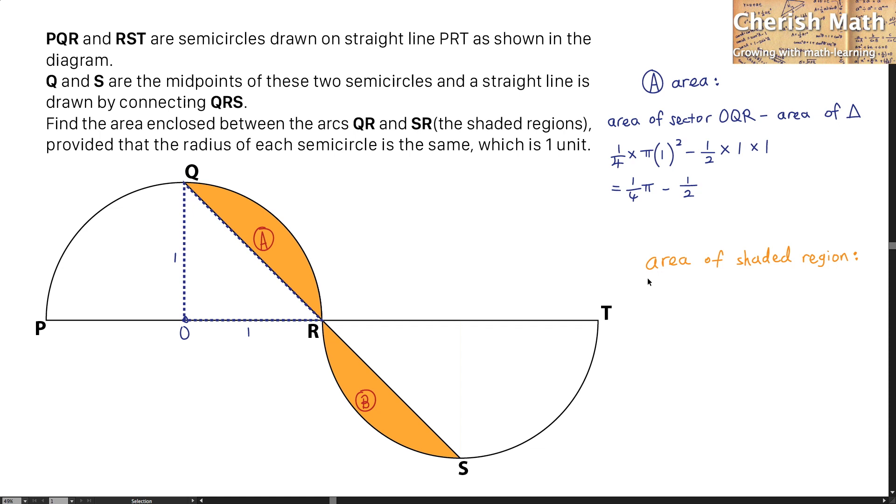Now to find the area of this shaded region, which is inclusive of region B, that is exactly twice region A. I'm going to use this value multiplied by two to get the value of the entire region of A and B. This is going to be one half pi minus one as the answer. I solved the problem.